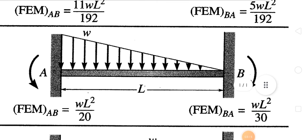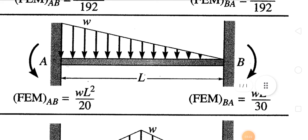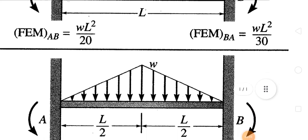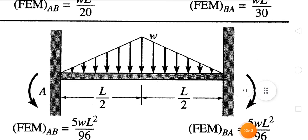Now let's say we have a variable distributed load W where the higher end is at point A and the lower end is at point B. The moment at the A side will be WL²/20, while on side B it will be a lesser moment: WL²/30.